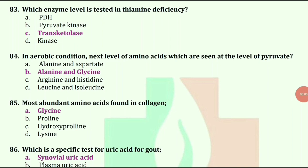In aerobic condition, amino acids which are seen at the level of pyruvate — options are alanine and aspartate, alanine and glycine, arginine and histidine, and leucine and isoleucine. The answer is alanine and glycine.